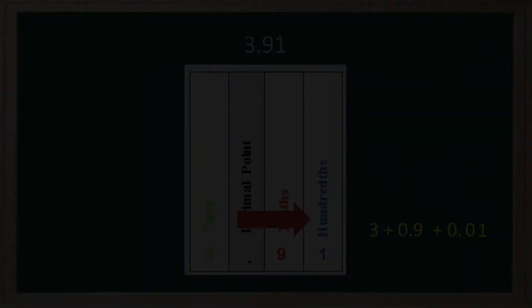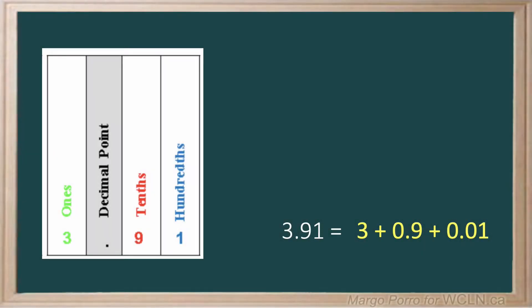Put it all together. 3.91 in expanded form equals 3 + 0.9 + 0.01.